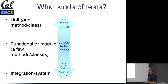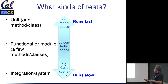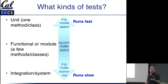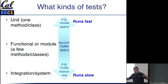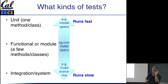We've talked about the kinds of tests, and we can put them on a spectrum: unit tests, where you're focusing on a particular method; functional or module tests, where you touch a few methods or classes; and integration or system-level tests. Unit tests tend to run really fast because they don't have to do a lot of setup. Integration tests like Cucumber tend to run slower because they have to fire up the entire app so it behaves the way it would with a real user.